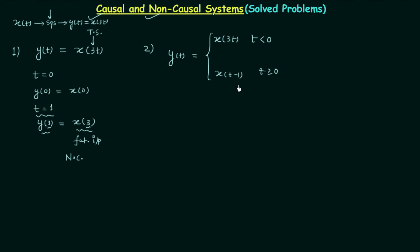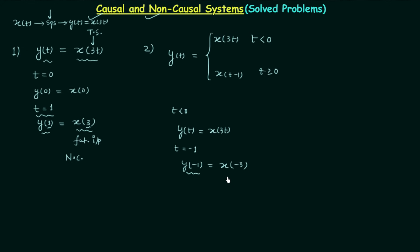For the case when t is less than 0, we already know what happens when y(t) equals x(3t). Let's make t equal to minus 1, which is less than 0, so we have y(-1) equal to x(-3). The present output is depending on the past input — with respect to t equal to minus 1, minus 3 is a past time — therefore this indicates the system is causal. If you take any value of t less than 0, the relationship will indicate the system is causal.